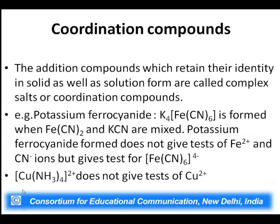Similarly, when ammonia solution is added to copper it gives rise to tetraamine copper sulfate, a blue colored compound. The properties of this blue colored compound are not the same as those of copper ions and ammonium ions, because it exists as the tetraamine copper ion in solution form as well as in solid form. On dissolution this will not give a positive test for copper ions.